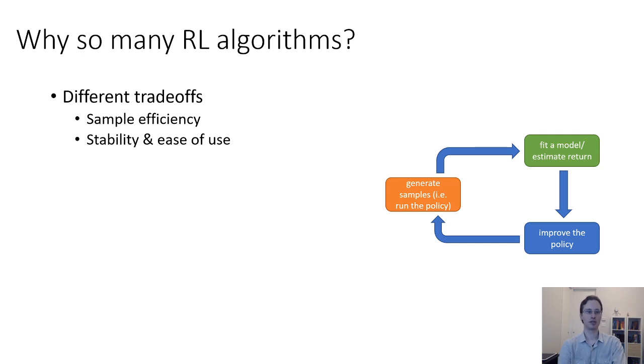Another trade-off is stability and ease of use. Reinforcement learning algorithms can be quite complex. They require trading off a number of different parameters, how you collect samples, how you explore, how you fit your model, how you fit your value function, how you update your policy. Each of these trade-offs and each of these choices often introduce additional hyperparameters, which can sometimes be difficult to select for your particular problem.